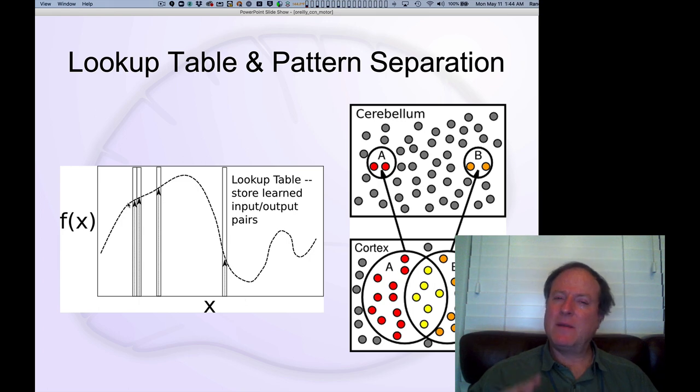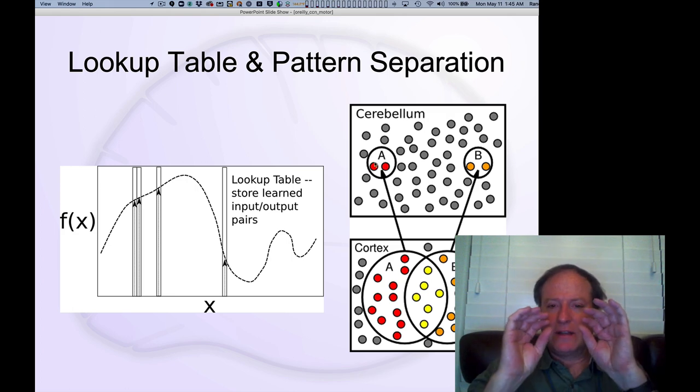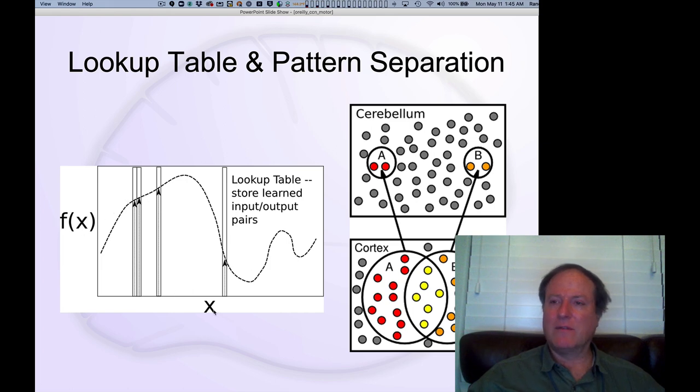But in the cerebellum, the idea is that you really have two different situations, two different patterns of activity in terms of sensory inputs coming in. And those may be very similar, as you can see here in this A and B pattern. But the job of the cerebellum is to kind of separate those out and encode them using different individual neurons that essentially the neurons are memorizing the proper value of f of x for every given input configuration.